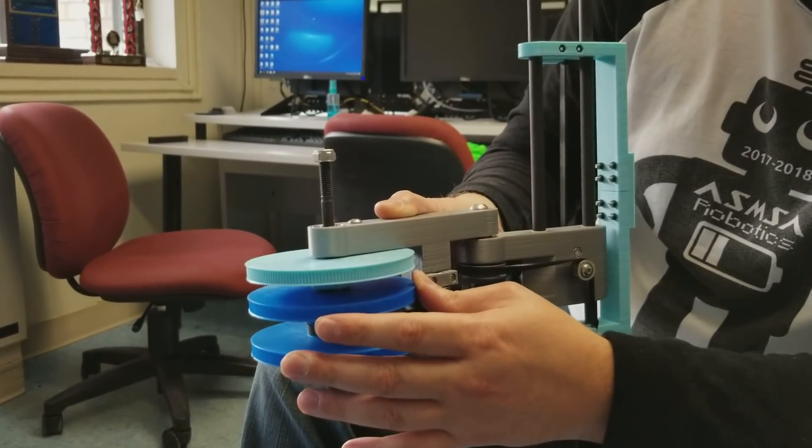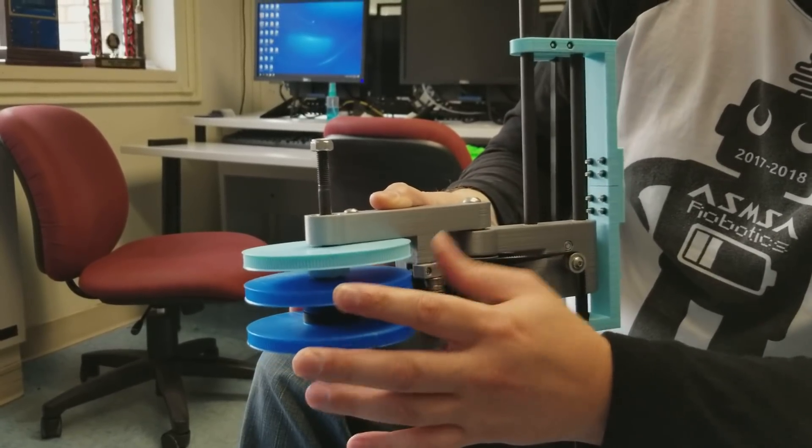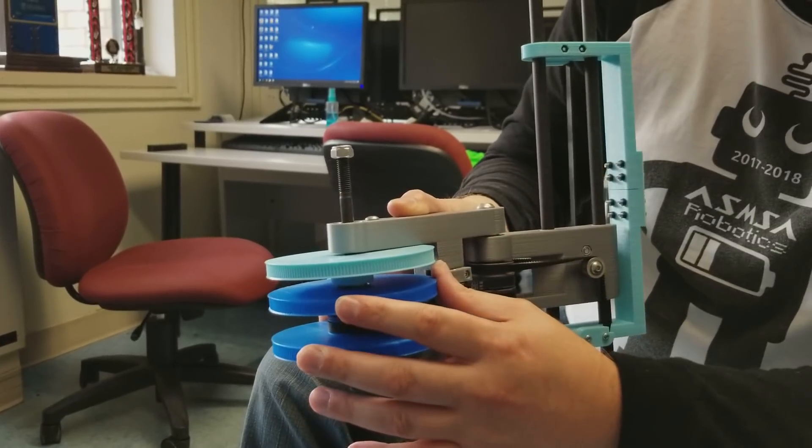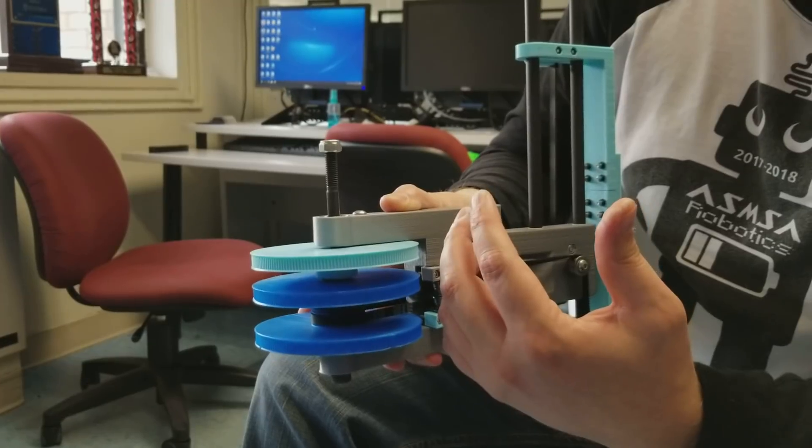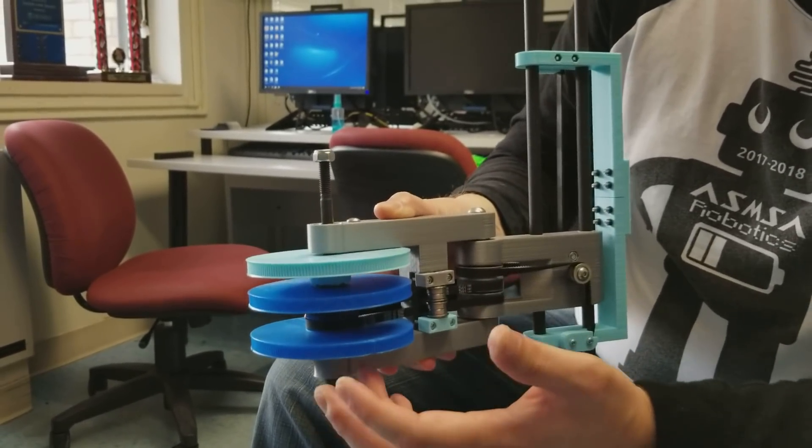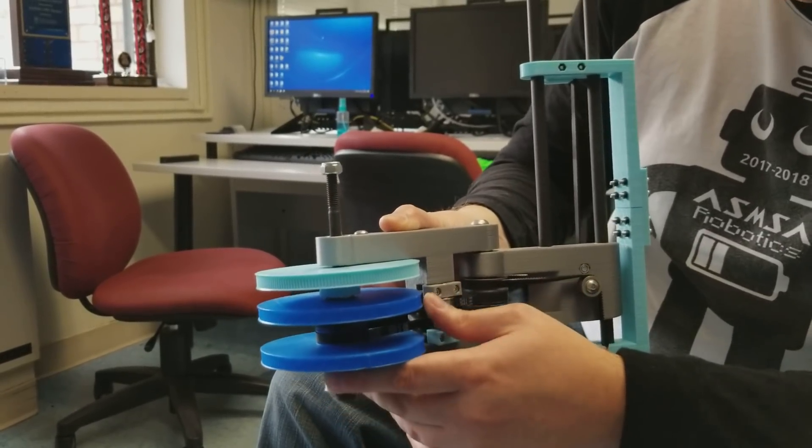The exact printer that we have is the Monoprice Mini Select, and so it's like 120 millimeters by 120 millimeter build plate, 125 if you really squeeze every millimeter out. So if you have a printer, you're going to be able to print this printer. There really are not very many printers smaller than the Monoprice Mini.